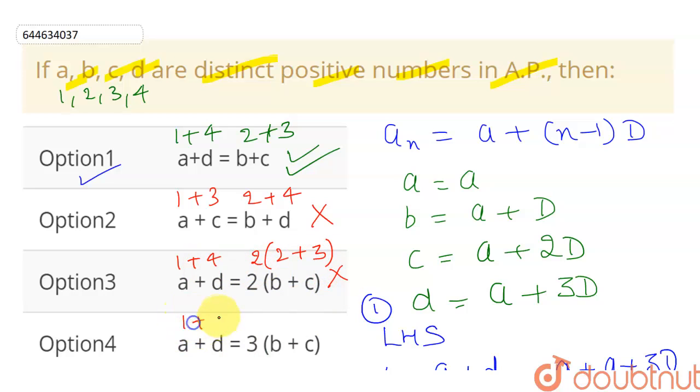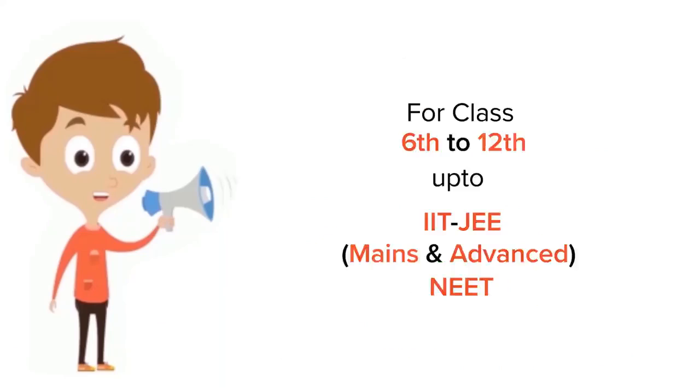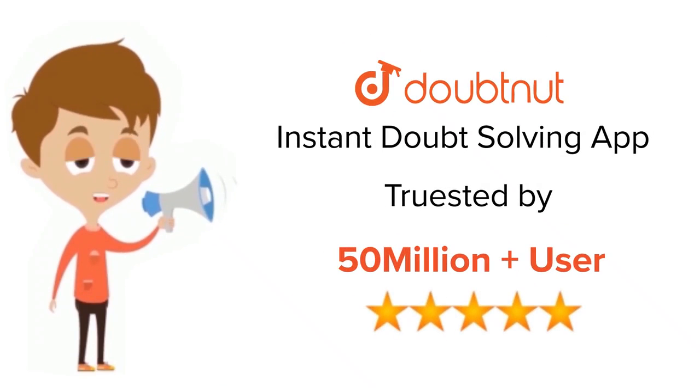Again, this will give me 1 plus 4 equals 5. And this will give me 3 times (b plus c): 2 plus 3 equals 5, times 3 is 15. So this option will be incorrect as well. Hope you understand the solution. Thank you.